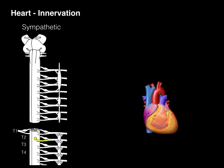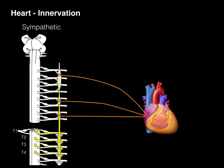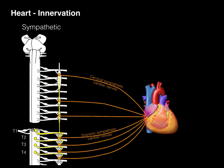From the T2 level, another preganglionic neuron ascends up to the middle cervical ganglion, synapses, and sends off a neuron — that's also a cervical sympathetic cardiac nerve. So here we have T1 to T4 all sending preganglionic sympathetics up the chain to the superior, middle, and inferior cervical ganglia. We now have both cervical sympathetic cardiac nerves and thoracic sympathetic cardiac nerves innervating the heart.